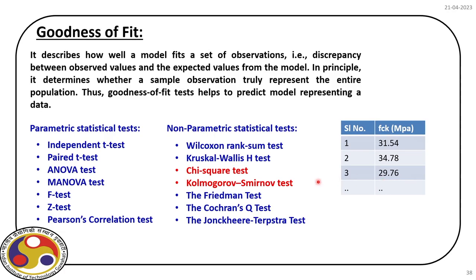We have a sample that represents a population, and that population has an underlying distribution with certain parameters. We first have to ensure which distribution that population follows, and then we can estimate its parameters. In goodness of fit, we are trying to investigate that question. It determines whether a sample observation truly represents an entire population — for example, with concrete cube strength tested in the laboratory, we verify how closely the observations represent a particular distribution.